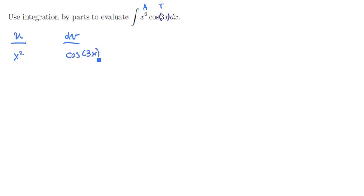Now for our table, we're going to differentiate the u column and we're going to integrate the dv column. So we're going to have a 2x here and a 1/3 sine of 3x. And we just do this again, differentiate and integrate to get a 2 on the left and a negative 1/9 cosine of 3x. Once again, differentiate to get a 0 and integrate to get a negative 1/27, the sine of 3x.